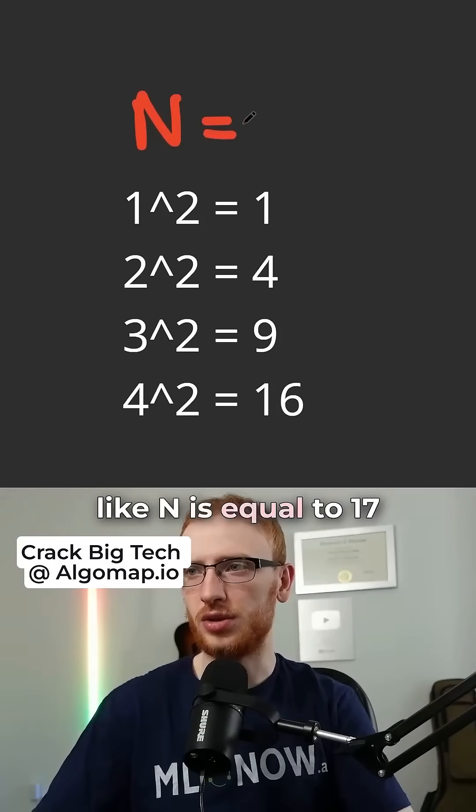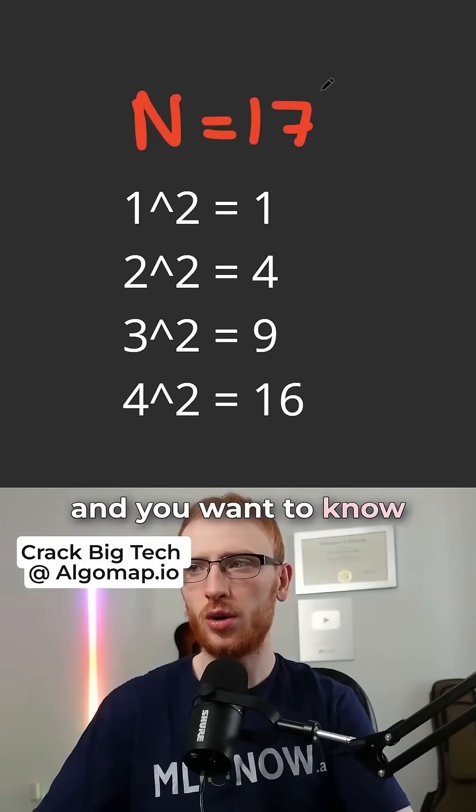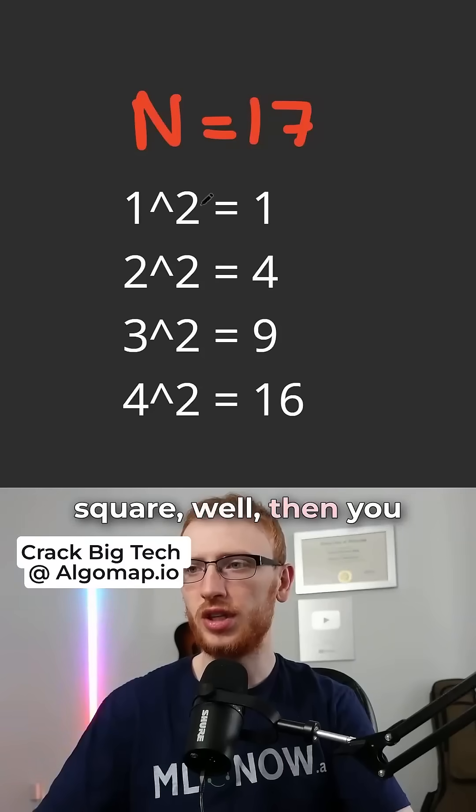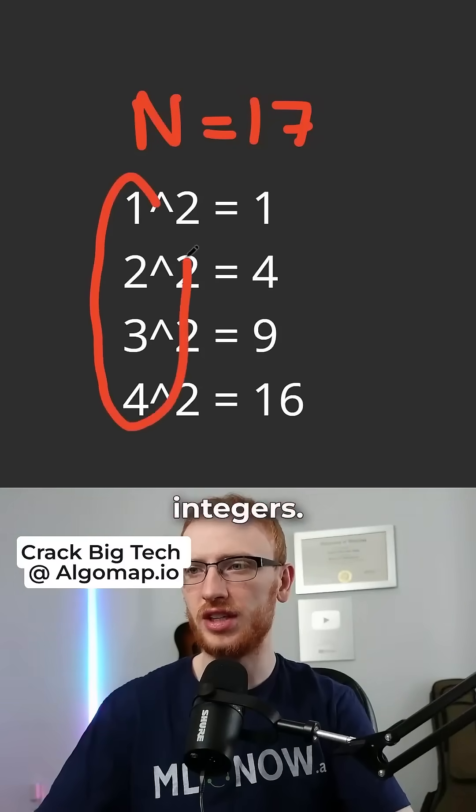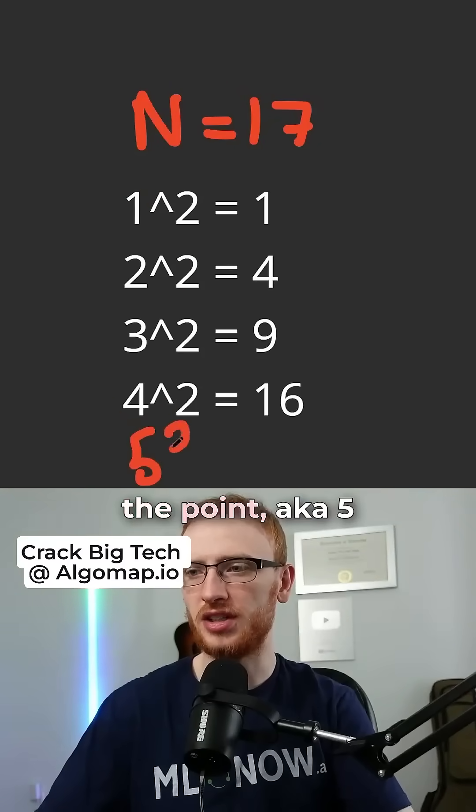So if you have a number like n is equal to 17, and you want to know if that is a perfect square, well then you could just enumerate over all of the integers.